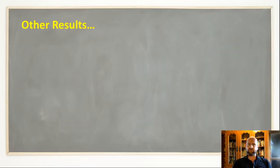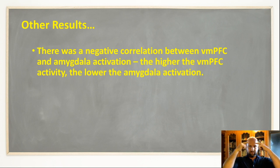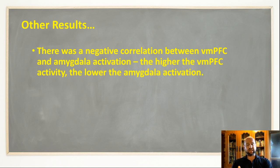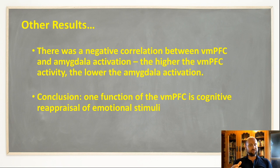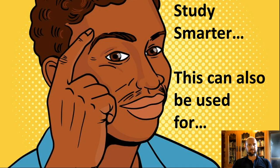An interesting additional finding from Uri et al.'s study was a negative correlation between the VMPFC — the ventromedial prefrontal cortex — and amygdala activation. The higher the VMPFC activity, the lower the amygdala activation. So the ventromedial prefrontal cortex plays an important role in cognitive reappraisal, showing more biology is involved: something has to be powering that cognition to have the effect on the amygdala. This is also a good example for localization of function.